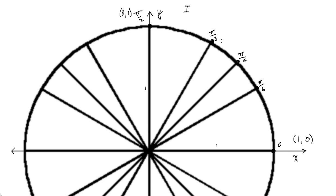Pi over 6, pi over 4, and pi over 3 are not terribly tricky if we look at them in terms of special right triangles. So we're going to talk about special right triangles. If you need a review, make sure you take a look at that video.